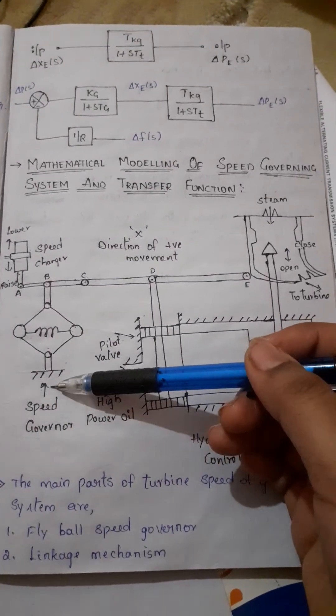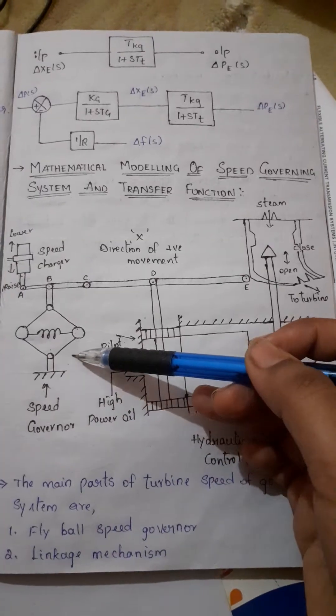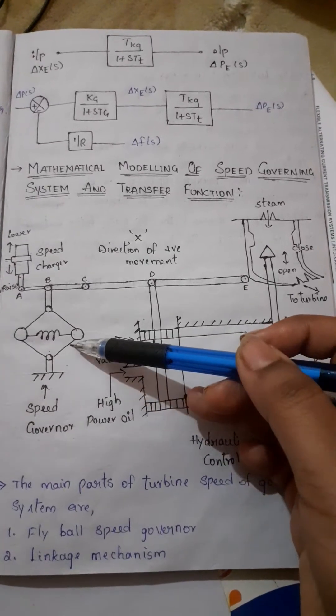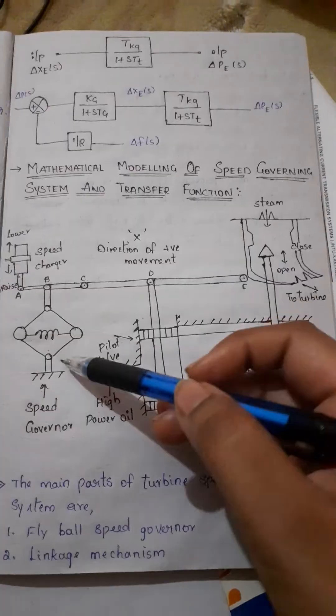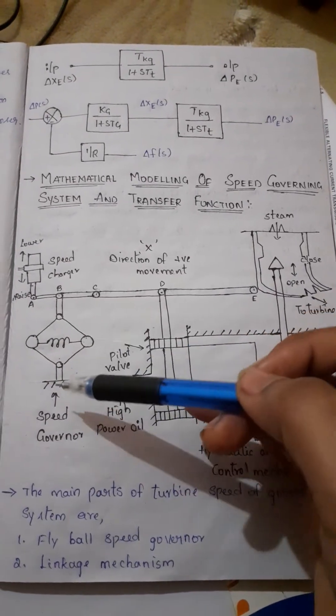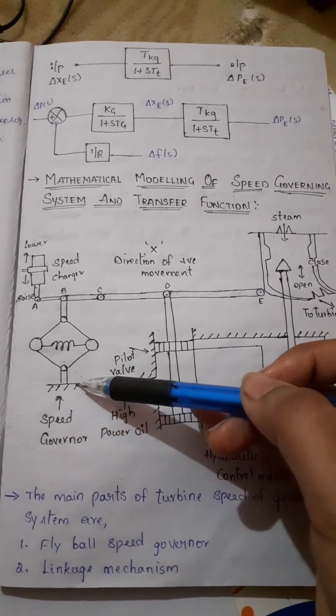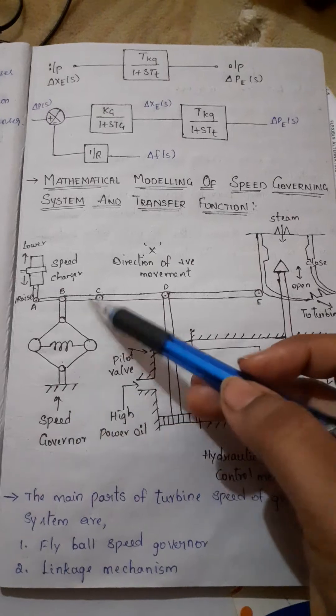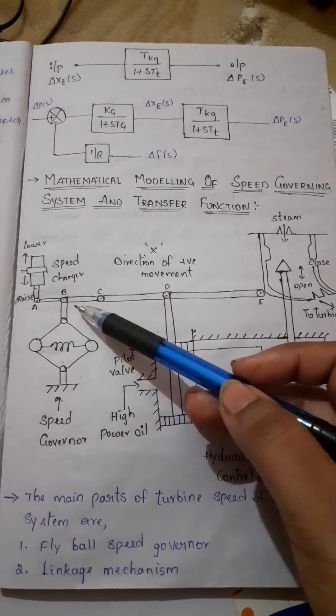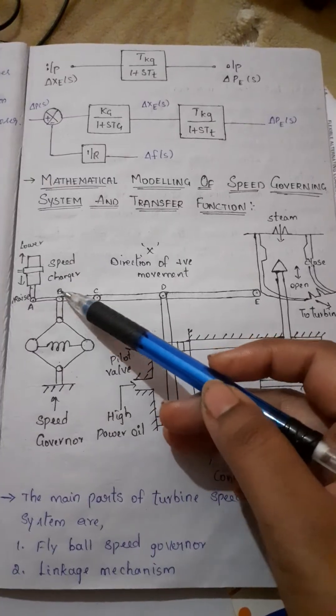The speed governor is the heart of the system and it senses the change in speed. The speed governor senses the speed. Whenever there is a change in speed, it senses it. As the speed increases, the fly ball moves outward and this point on the linkage mechanism moves downwards.